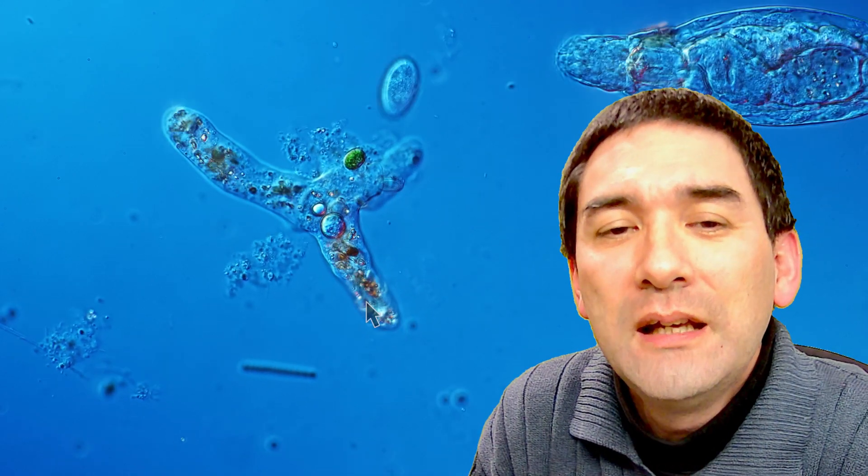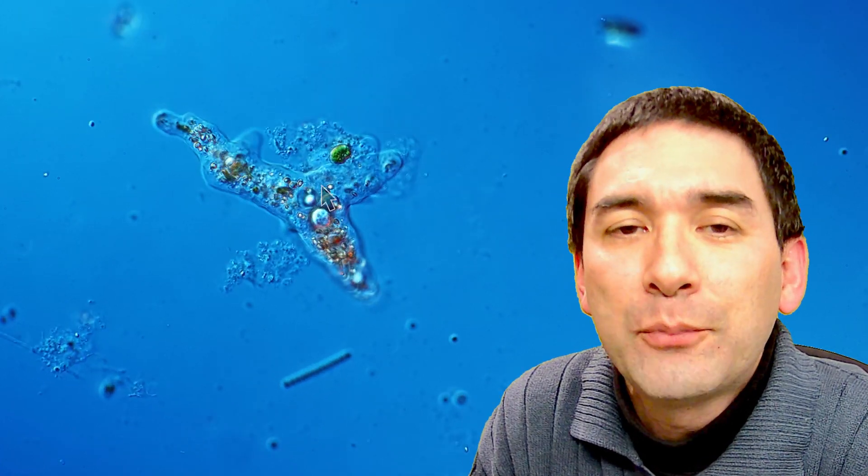So what it does actually is it has those pseudopods, these are the extensions, and it tries to flow around the food that it wants to eat and capture it this way. So in this case over here it tries to capture whatever this is, it's trying to flow around it and then the membrane closes again on the other side and then it has engulfed it.